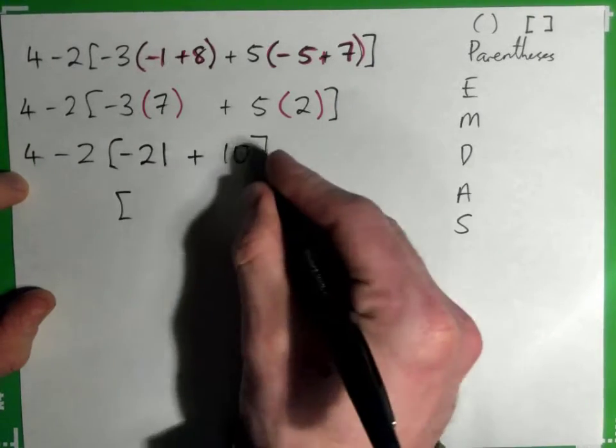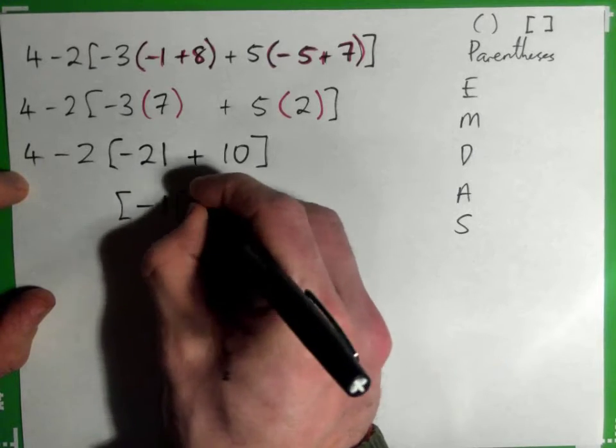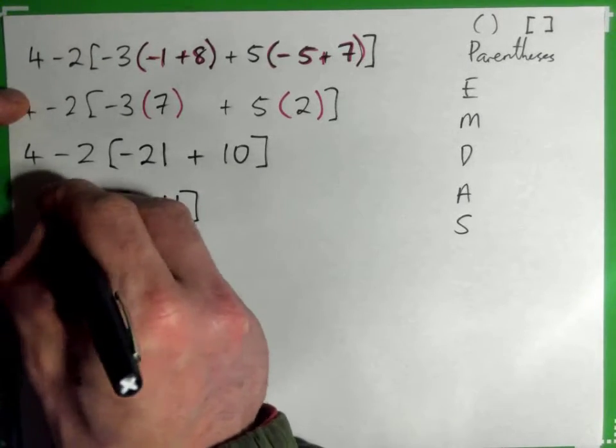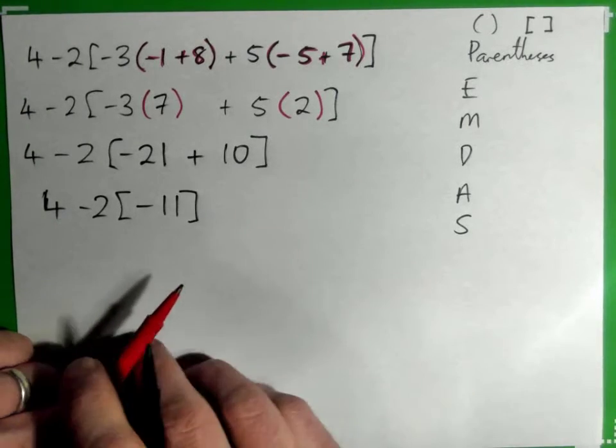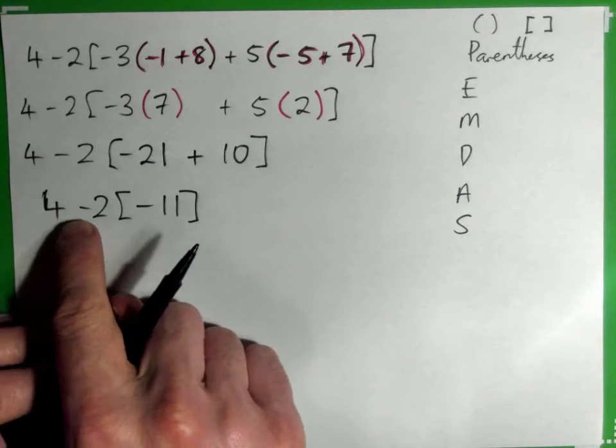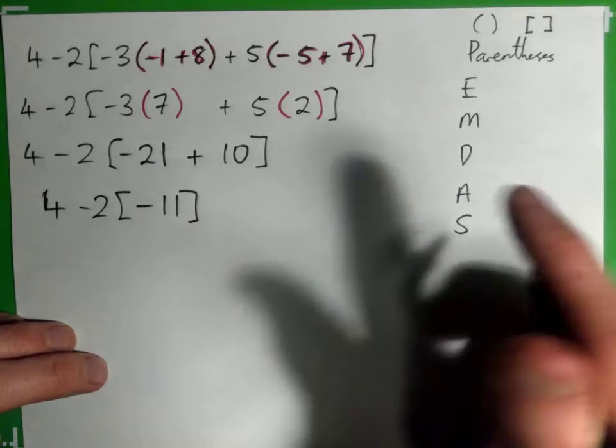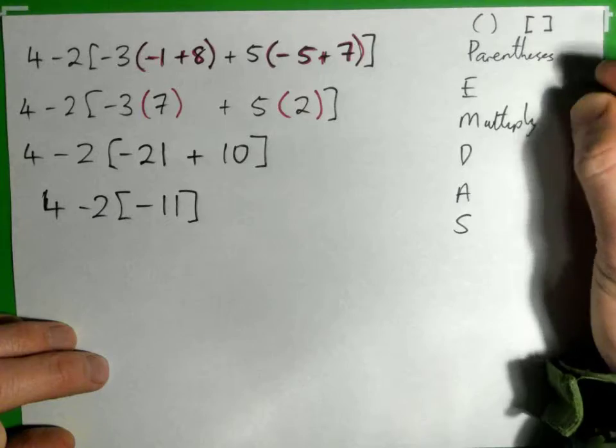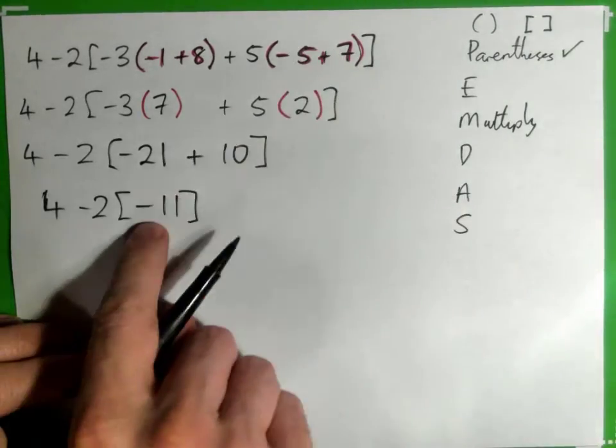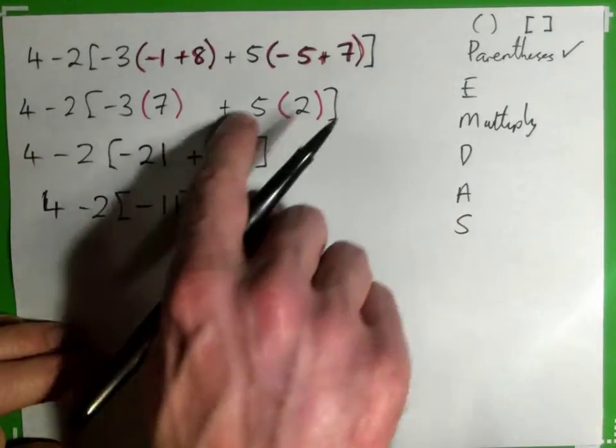So 21 negative and 10 positive is negative 11. So we've got a subtraction, but we have a multiplication. So we must multiply. Parentheses are actually all done at this point, because this whole thing just became a negative 11. Now we need to actually multiply.